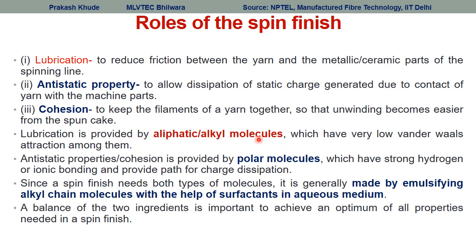For lubrication, aliphatic or alkyl molecules with low van der Waals forces are needed, while anti-static and cohesion properties are provided by polar molecules which have strong hydrogen bonding and provide a path for charge distribution. Spin finish therefore needs both types of molecules — aliphatic/alkyl and polar molecules. These are generally made up of emulsifying alkyl chain molecules with the help of surfactants. A balance between these two components is important to optimize all the required properties of spin finish.